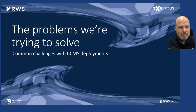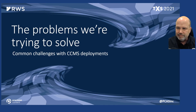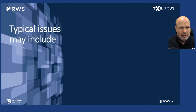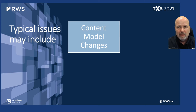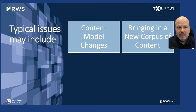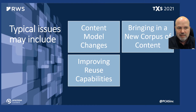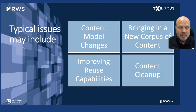What are some of the problems we're trying to solve? Typically we put them into four categories: content model changes, bringing in a new corpus of content, improving reuse capabilities, and general content cleanup activities.